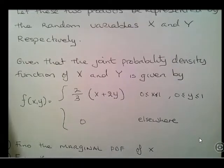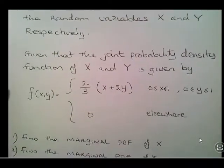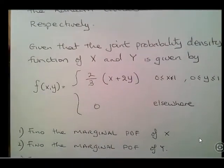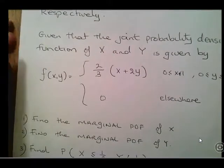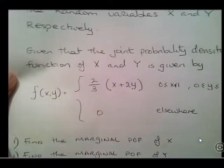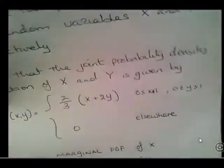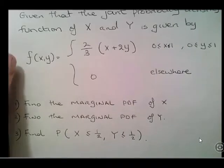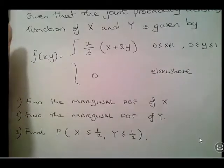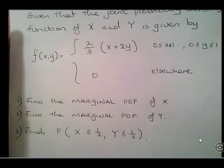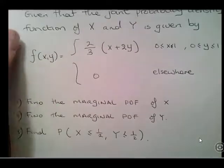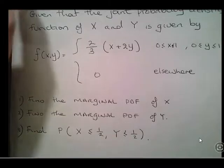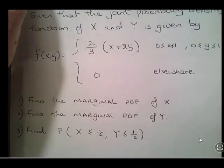We need to find the marginal PDF of x, the marginal PDF of y, and also find the probability of x less than or equal to 1 half and y less than or equal to 1 half — a joint probability.